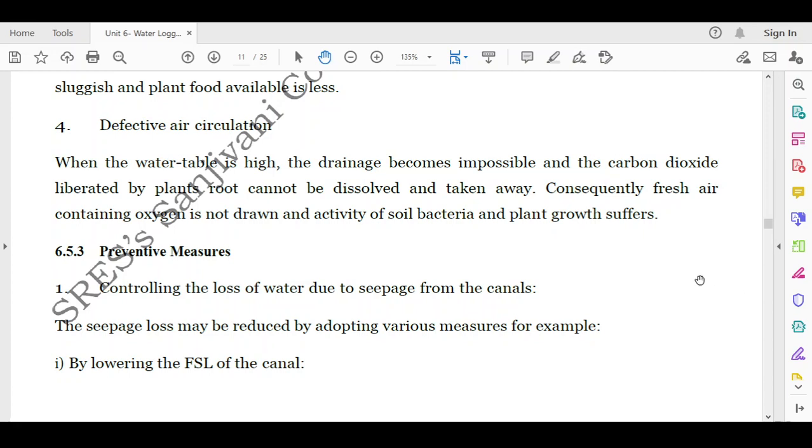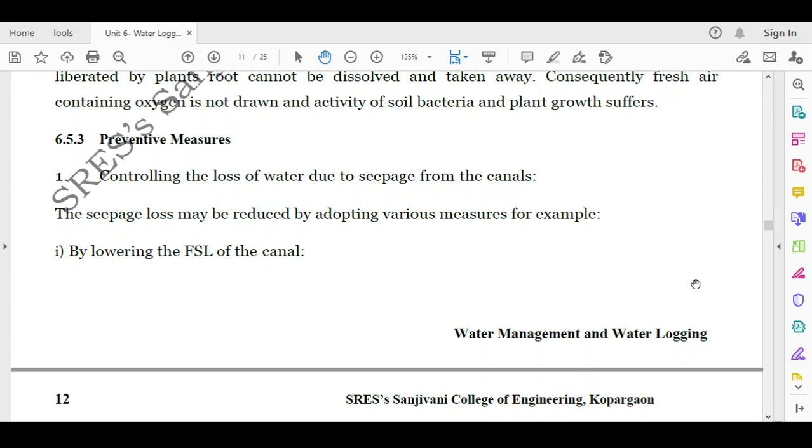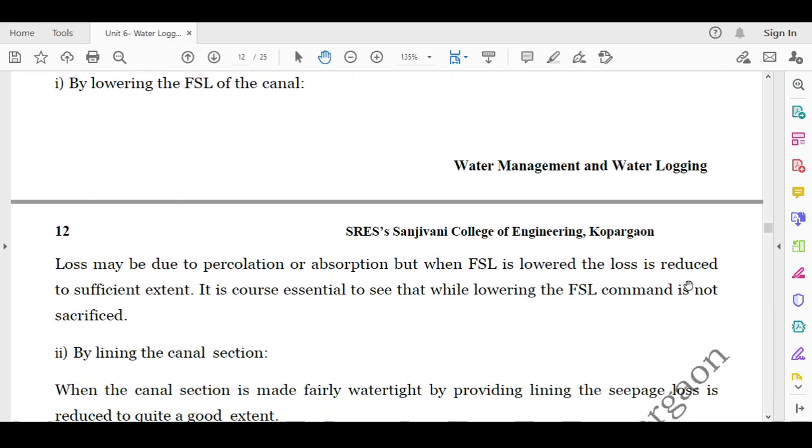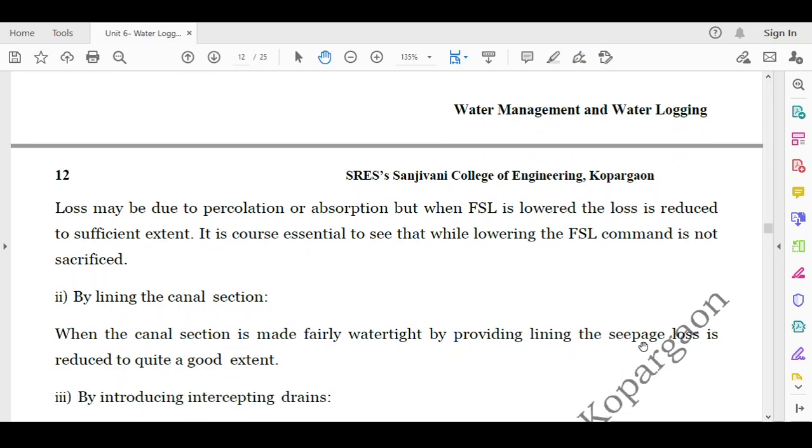It is also one of the parameters. Then what are the preventive measures? What are the measures to avoid this water logging? First is controlling the loss of water due to seepage from the canals. The seepage loss may be reduced by adopting various measures, for example by lowering the FSL of the canal. Loss may be due to percolation or absorption, but when the FSL is lowered, the loss is reduced to sufficient extent. Second, it is of course essential to see that while lowering the FSL, command is not sacrificed. Even if you lower the FSL, there should be adequate water available to cater the need of the commanded area. Then second is by lining the canal section. When the canal section is made fairly water tight by providing lining, the seepage loss is reduced to quite a good extent.